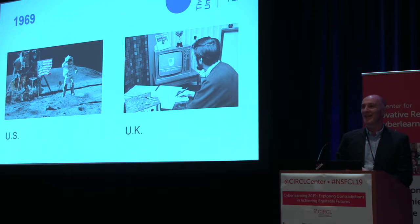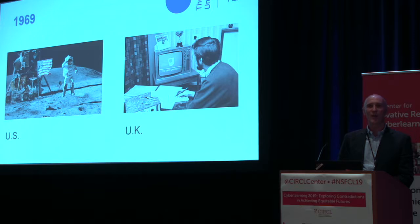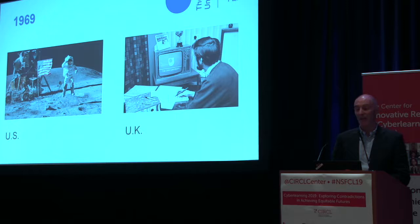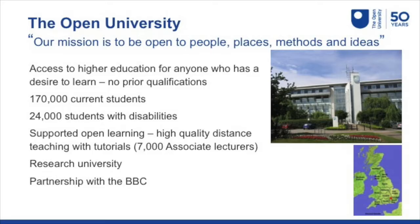In the UK in 1969, it was the start of an amazing educational program — to build a completely new type of university that would be open to all, that would engage people in high-quality higher education. Two million people have benefited from courses at the Open University since then, and it's still going. Its mission is to be open to people, places, methods, and ideas, and we take that very seriously.